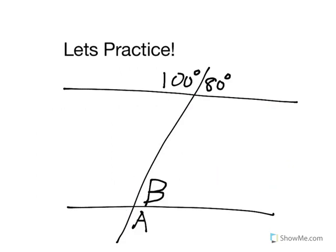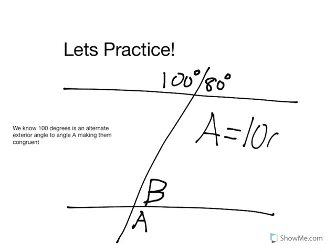Use what we have learned about angles to find A and B. We know 100 degrees is an alternate exterior angle to angle A, making them congruent. We also know 80 degrees and angle B are corresponding angles, making them congruent.